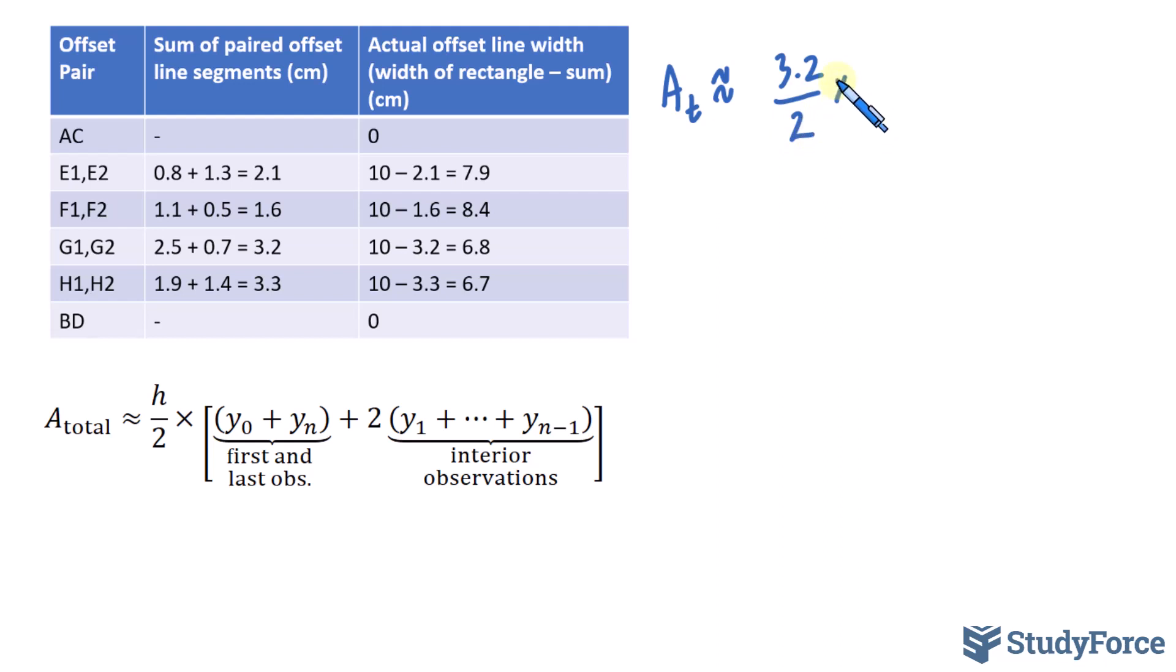And that's being multiplied to the first and the last observations. For that, we will look at AC and BD. Those were our first and our last offset lines. Remember, we found it to be 0 and 0. So in brackets, we'll add 0 plus 0, which simply equates to 0. So we can kind of ignore this for the data that we've been provided.